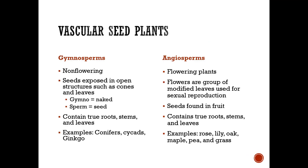Gymnosperms are non-flowering plants whose seeds are exposed in open structures such as cones and leaves. Gymno means naked, sperm means seed. They contain true roots, stems, and leaves. Examples include conifers, cycads, and ginkgo.